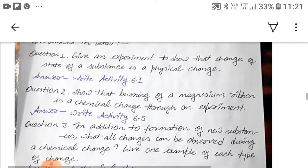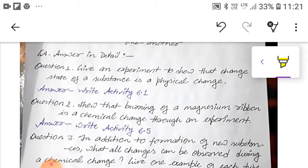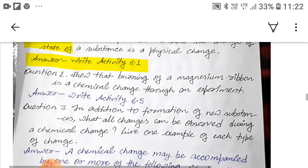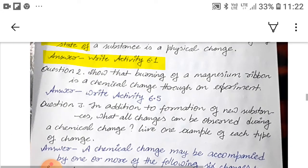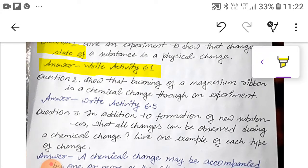So question 1, you can see, give an experiment to show that change of state of a substance is a physical change. So here you have to write activity 6.1 from your book. Now the question 2, show that burning of a magnesium ribbon is a chemical change through an experiment. Here you have to write activity 6.5 from your book.